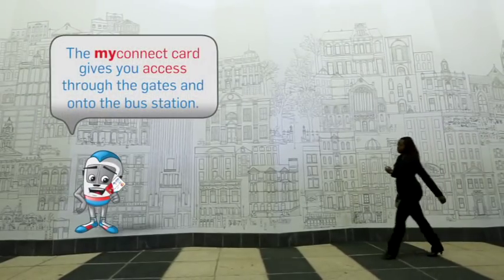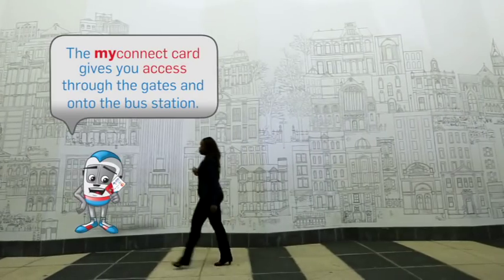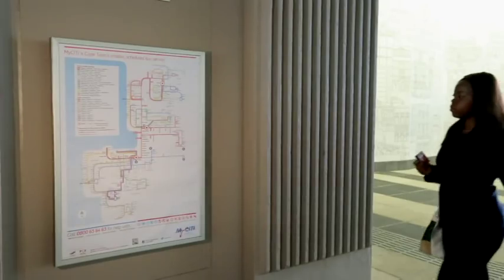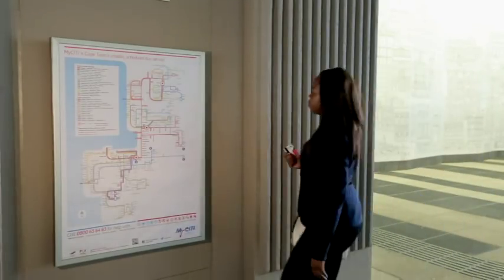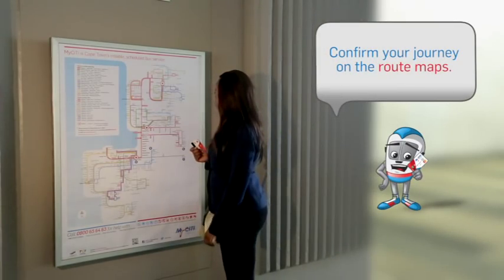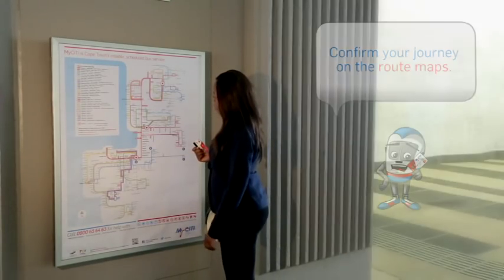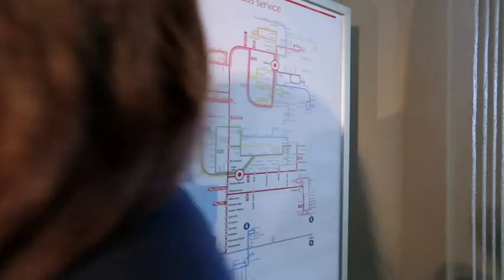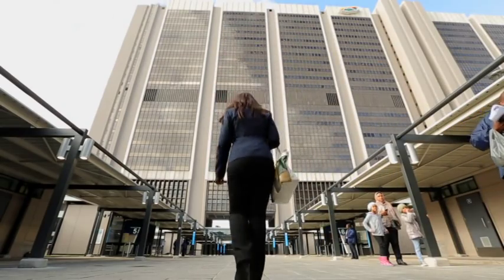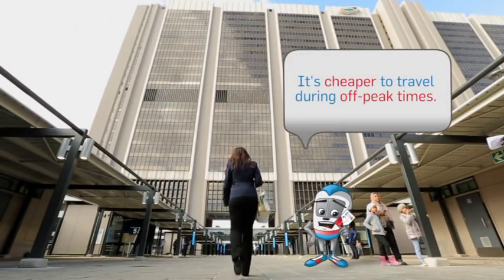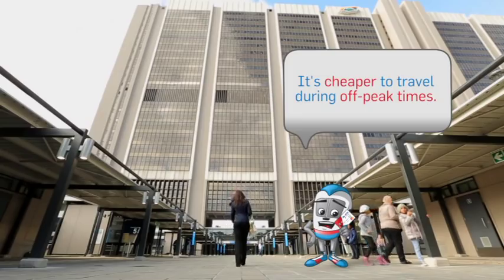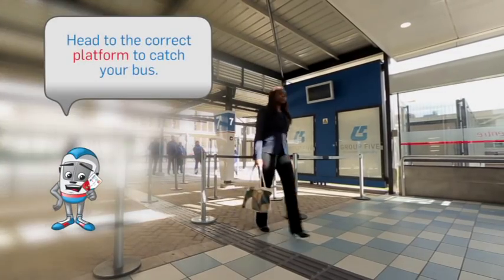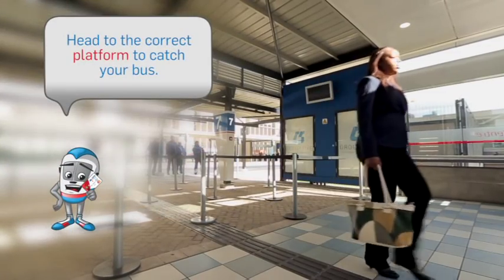The MyConnect card gives you access through the gates and onto the bus station. Confirm your journey on the route maps. It's cheaper to travel during off-peak times. Head to the correct platform to catch your bus.